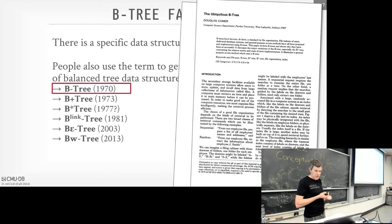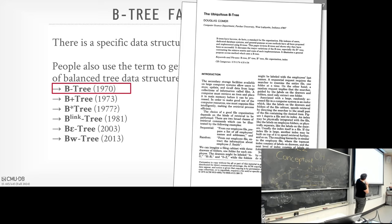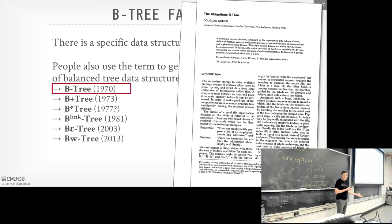There's no original B+ tree paper — there's a tech report from IBM around 1973 that discusses variants of the B tree including the B+ tree. They also never defined what the 'B' stands for. Guesses include 'balanced,' the author's initial 'Bayer,' or 'Boeing' — since McCreight worked at Boeing and invented it there. Boeing needed a database to track airplane parts, much like IBM built IMS to track rocket parts for the moon program.